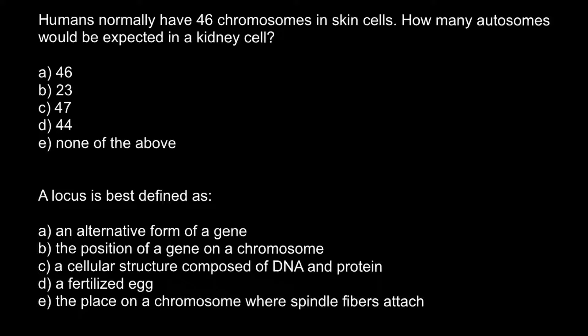Here is the first question. Humans normally have 46 chromosomes in skin cells. How many autosomes would be expected in a kidney cell? Here are the five answers to choose from.